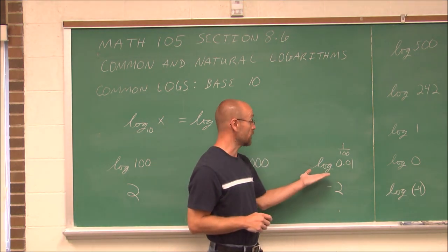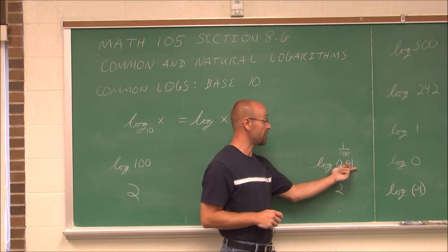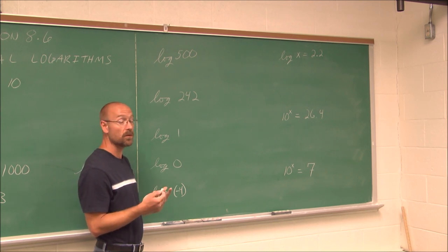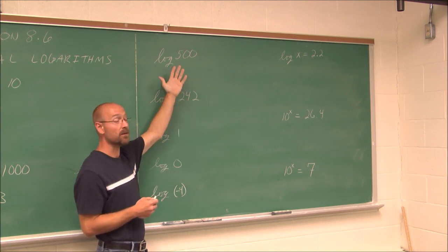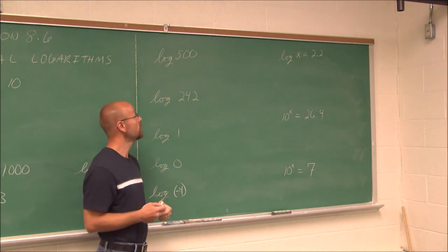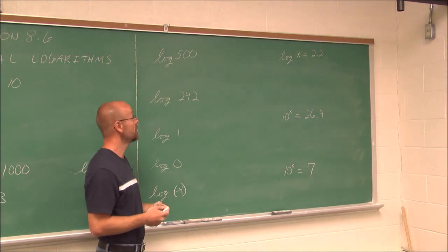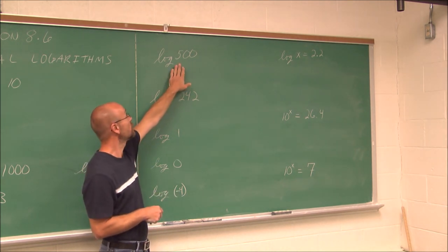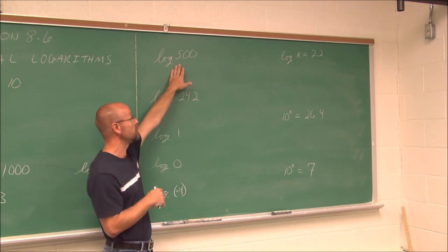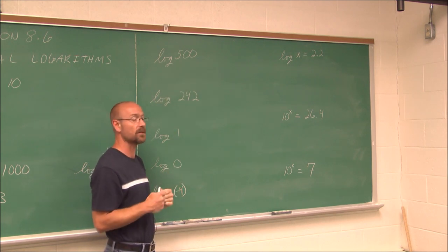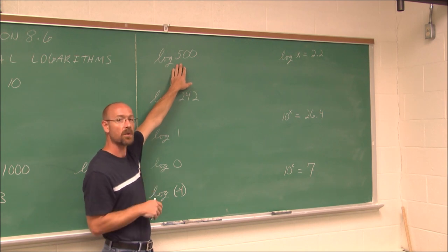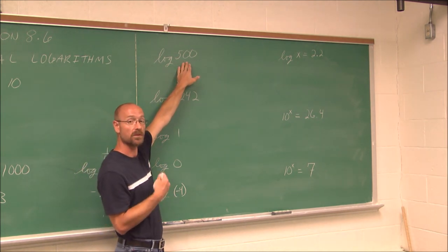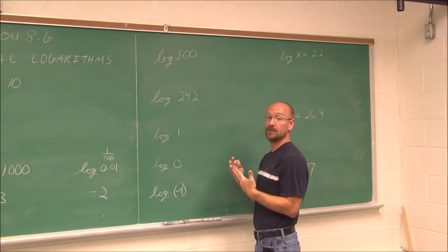What if we're dealing with common logs and the argument is not a nice factor of 10? Let's look at log of 500. In the previous section, we explored the rules of logarithms. Sixty years ago, engineers had a book of logs and used properties of logarithms to break values down into something smaller. I'll do that here: 500 is 100 times 5. Using the product rule of logs, log of 500 equals log base 10 of 100 plus log base 10 of 5.